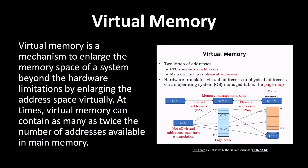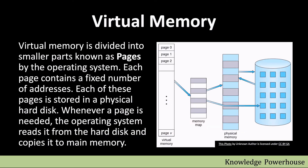In virtual memory, the concept is simple: the operating system divides the whole of memory into smaller parts known as pages. Each page has a fixed number of memory addresses — virtual memory addresses. Each of these pages can then be stored on a physical hard disk.